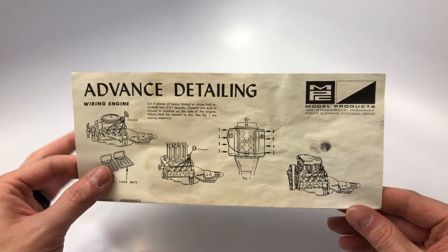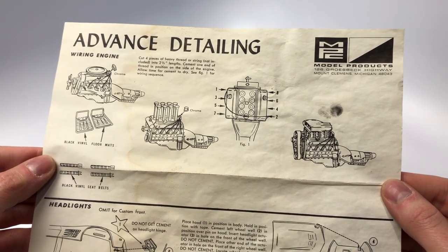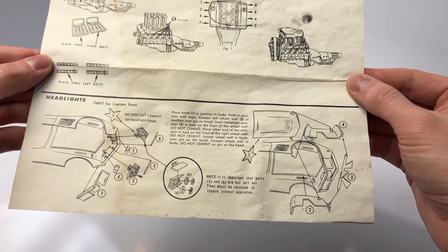This completes the instruction manual however there is also a small detailing manual that came with the kit with some detail parts. We can see MPC was even a rivet counter by stating the exact fire sequence for the Chevy engine.